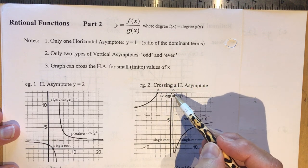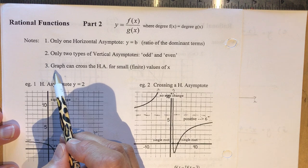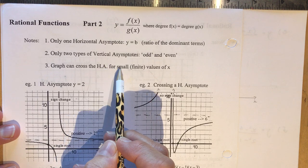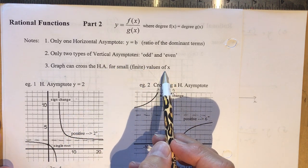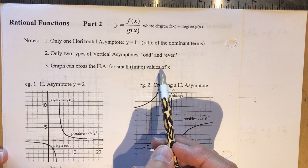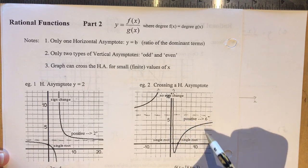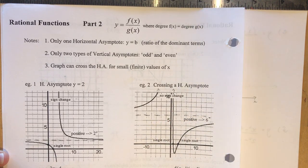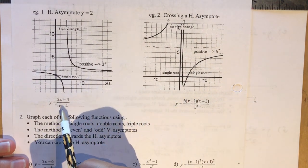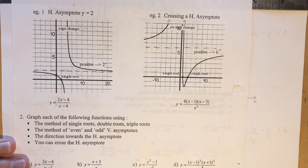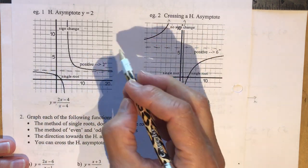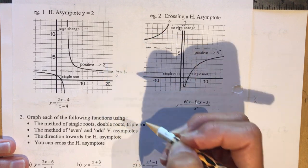Here's something people sometimes get confused about: the graph can cross the horizontal asymptote for small or finite values of x. The horizontal asymptote only describes what happens as x approaches infinity — it doesn't describe what happens for x values in a finite area. So in the graph of 2x minus 4 over x minus 4, the horizontal asymptote is y equals 2 over 1. Make your dotted line and don't forget to label it y equals 2.